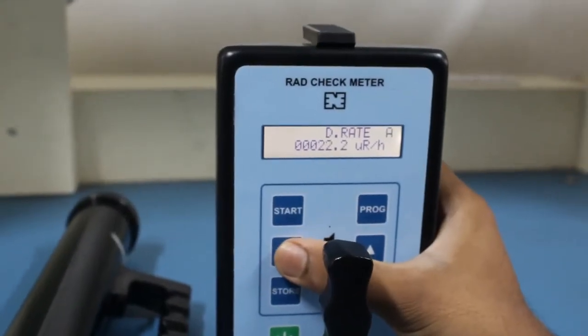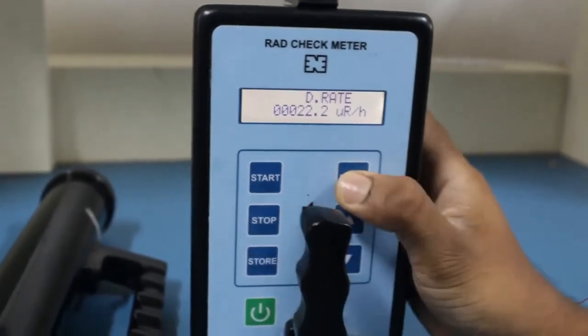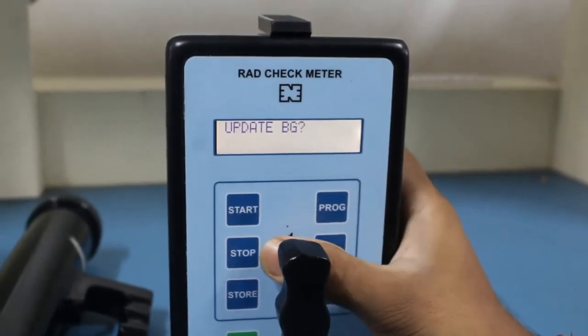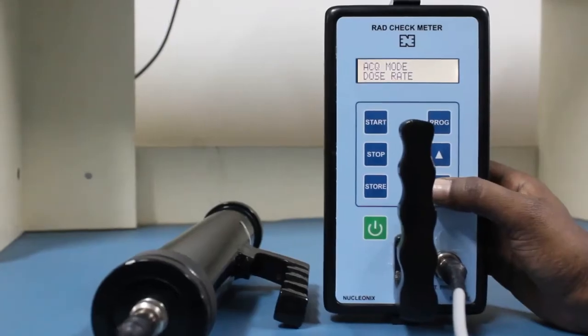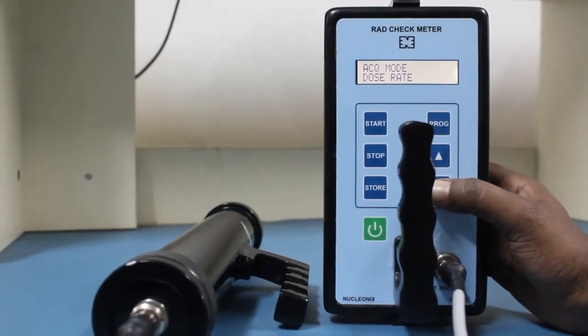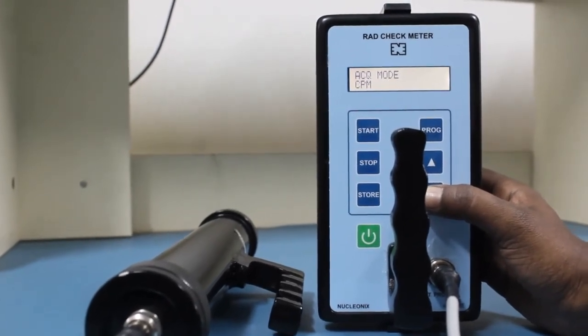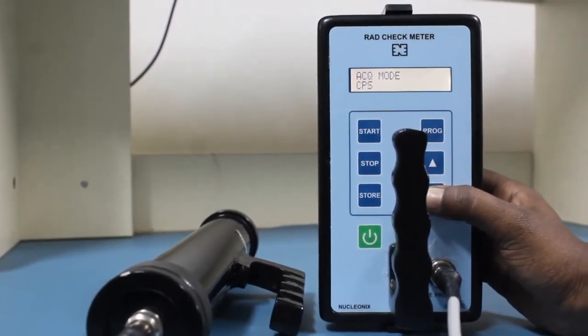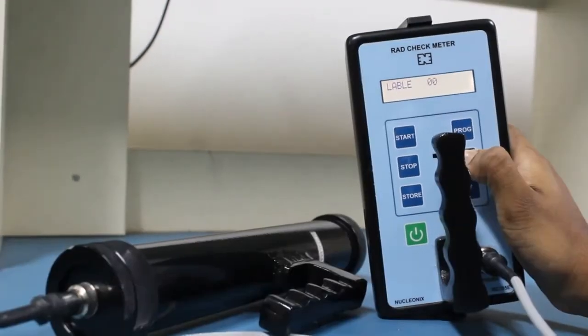Going to the interface of the RadCheck Meter, press stop button and then press PROG button. In the ACQ mode, you can select different modes of operation like dose rate mode, preset time, counts per minute CPM, counts per second CPS.